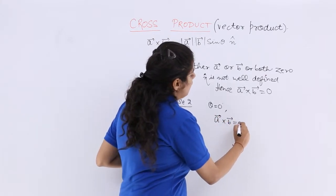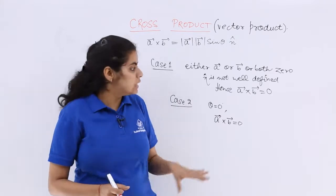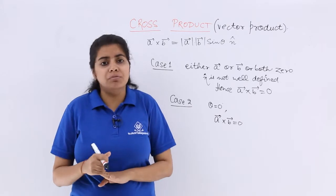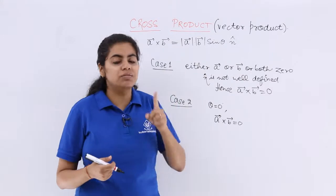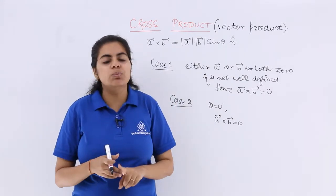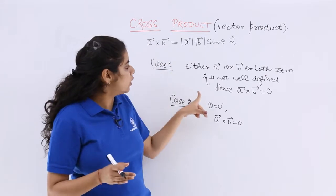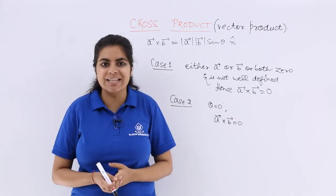Again here we do not have any clear idea about the unit vector n cap. So these are the two important cases. One more thing, why is it always called the vector product? Because here we are concerned with the direction. So you will read it as vector product or cross product because of the placement and positioning of the cross instead of dot in this case.